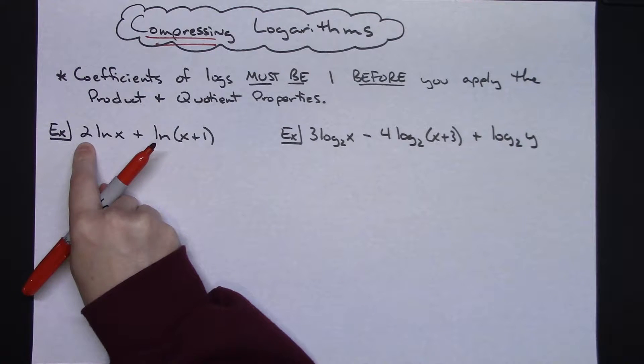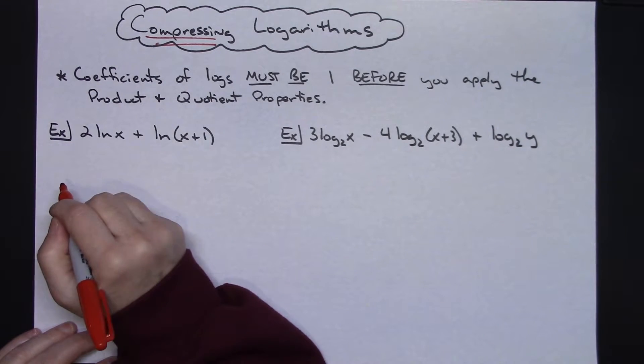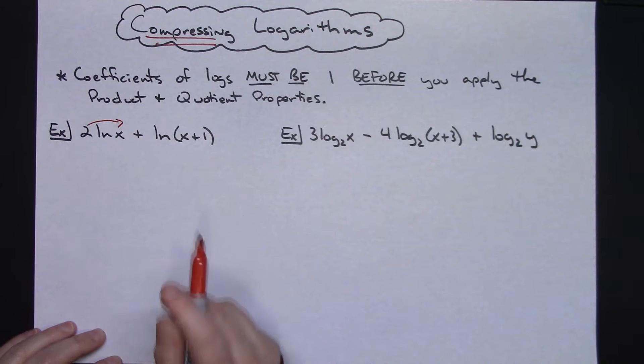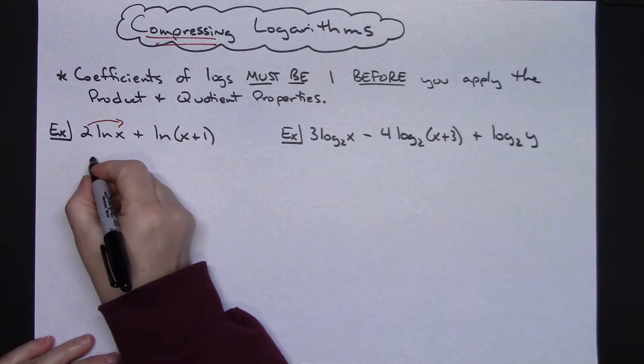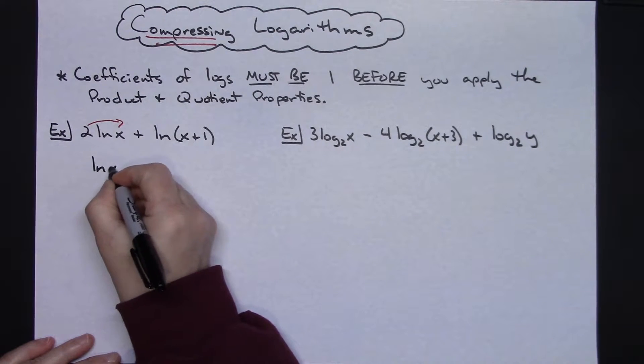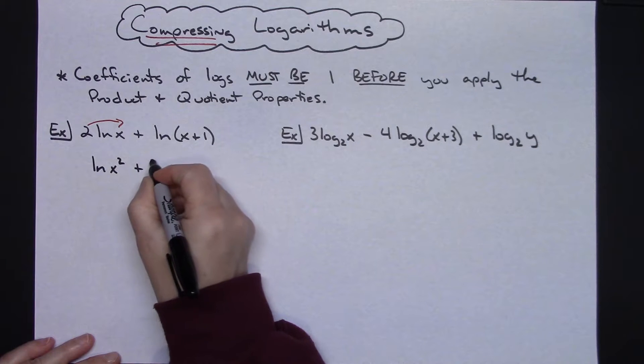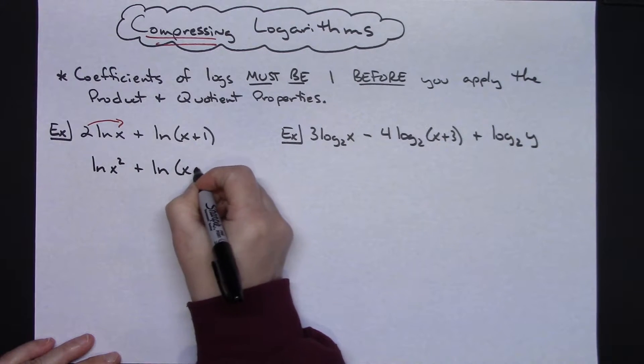Right here I have a 2, which is not a 1, so I'm going to want to jump the frog and get rid of that 2 out in front before I start the problem. So then I would have the natural log of x squared plus the natural log of (x+1).